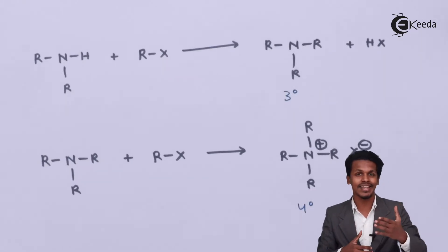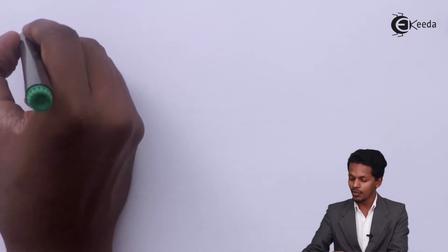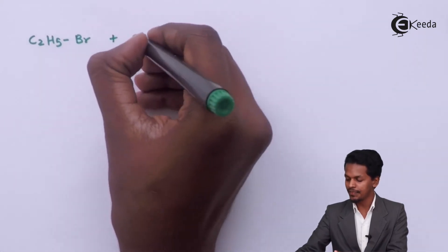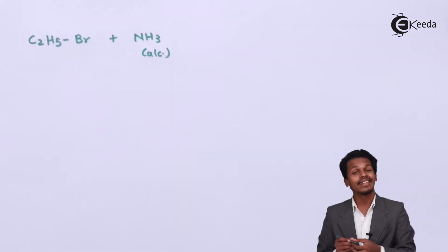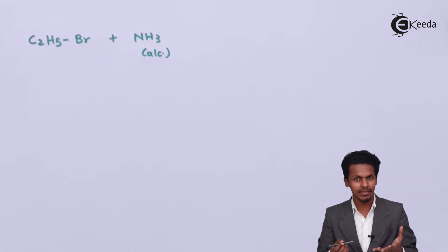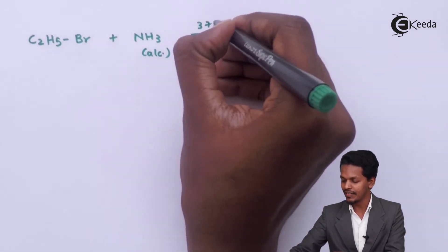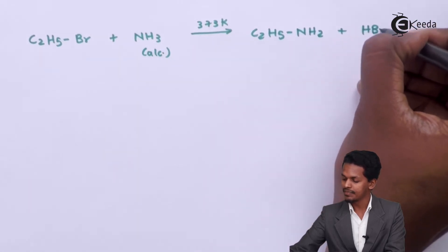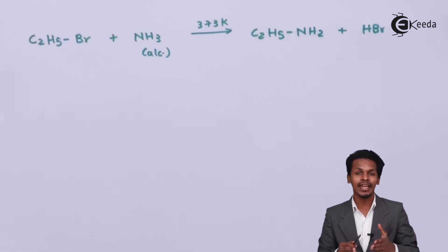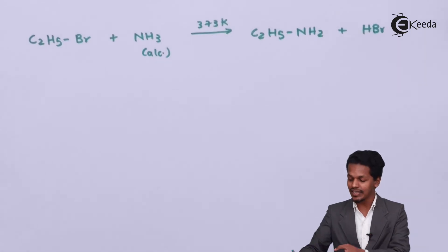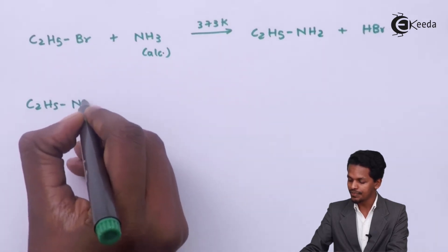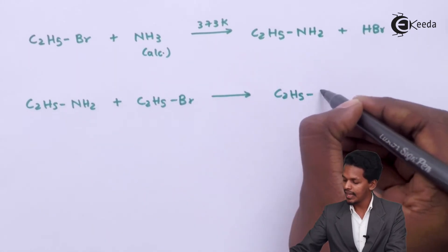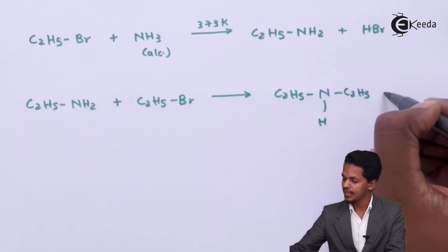For example, suppose we are talking about ethyl bromide. If ethyl bromide is reacted with alcoholic NH3 and the alkyl halide is present in excess, at 373 Kelvin the product we get is C2H5NH2 plus HBr. So this product is nothing but a primary amine — ethylamine. But this primary amine will react with another molecule of C2H5Br to give C2H5–NH–C2H5 plus HBr.